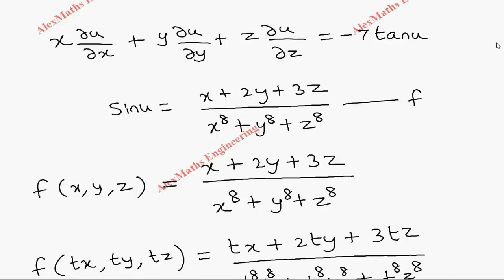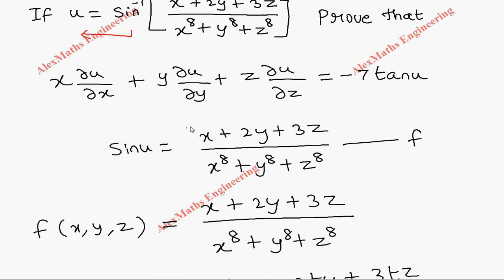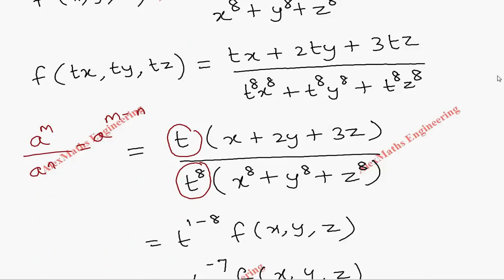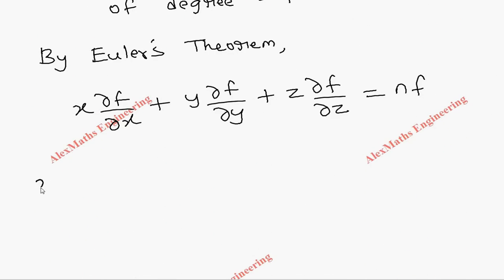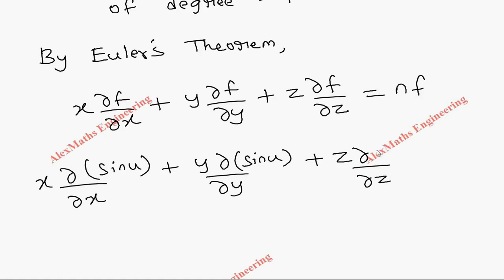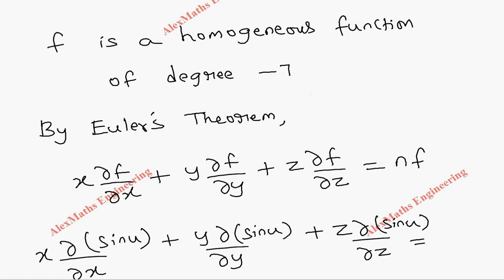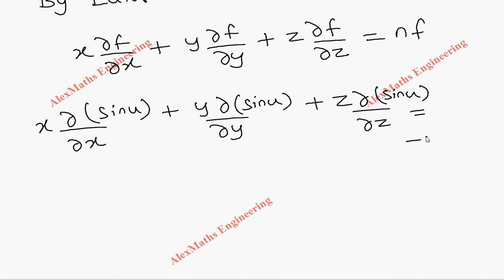Here, this f is both sine u as well as this expression. Now we are going to use sine u in place of f. So x into ∂/∂x of sine u, in the same way y into ∂/∂y of sine u, plus z into ∂/∂z of sine u, which is nothing but the value of n, which is degree minus 7. So minus 7 into sine u.